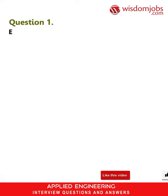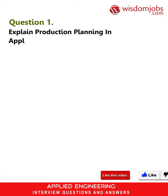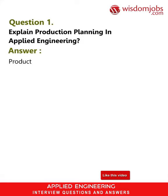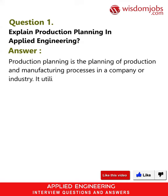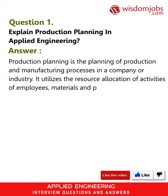Question 1: Explain production planning in applied engineering. Answer: Production planning is the planning of production and manufacturing processes in a company or industry. It utilizes the resource allocation of activities of employees, materials, and production capacity in order to serve different customers.